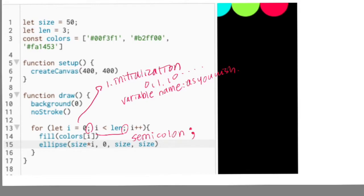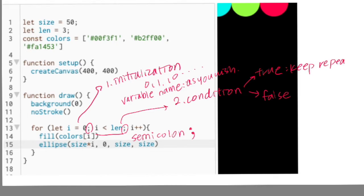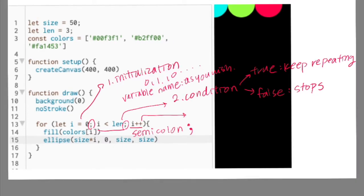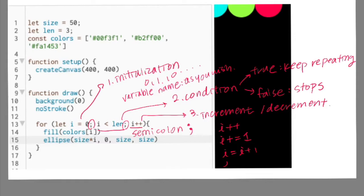The next part is the condition. Repeat this code over and over, but we also want to make it stop at some point, otherwise your computer would get overwhelmed by infinite loops. This code block will get executed as long as this condition stays true. The last part is incrementing or decrementing the index of the for loop. Plus plus means plus 1, minus minus means minus 1. If you want to increment by adding 2, you would write i += 2, which is the same as i = i + 2. For subtracting 3, you'd write i -= 3, meaning i = i - 3.